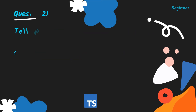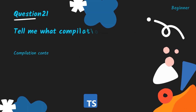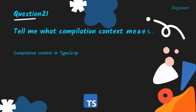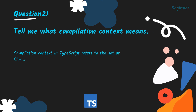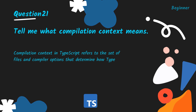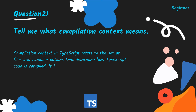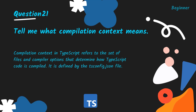Tell me what compilation context means. Compilation context in TypeScript refers to the set of files and compiler options that determine how TypeScript code is compiled. It is defined by the tsconfig.json file.